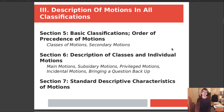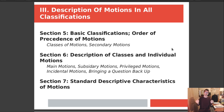Chapter 3 is the description of motions in all classifications. Section 5 is specifically about the basic classifications and the order of precedence of motions, the classes of motions, and secondary motions. When you have a main motion on the floor — that is the question before the assembly — you can make other special types of motions underneath it that don't necessarily change the question at hand. Section 6 covers main motions, subsidiary motions, privilege motions, incidental motions, and bringing a question back up.